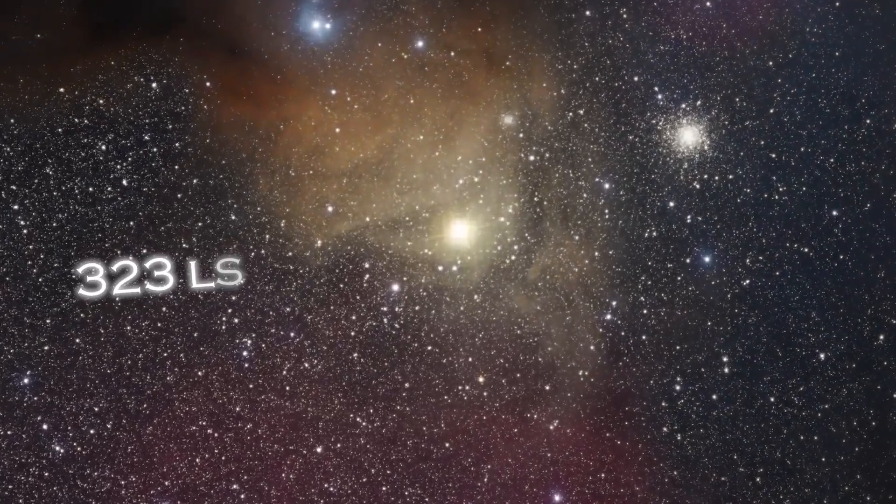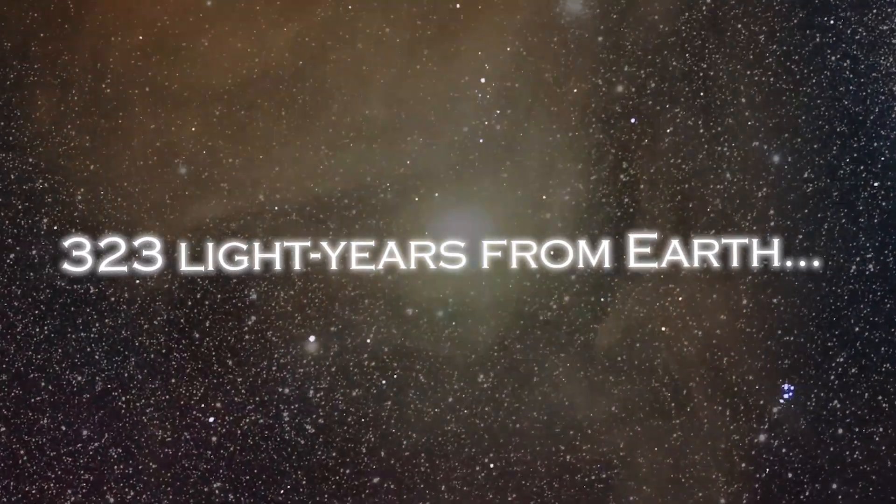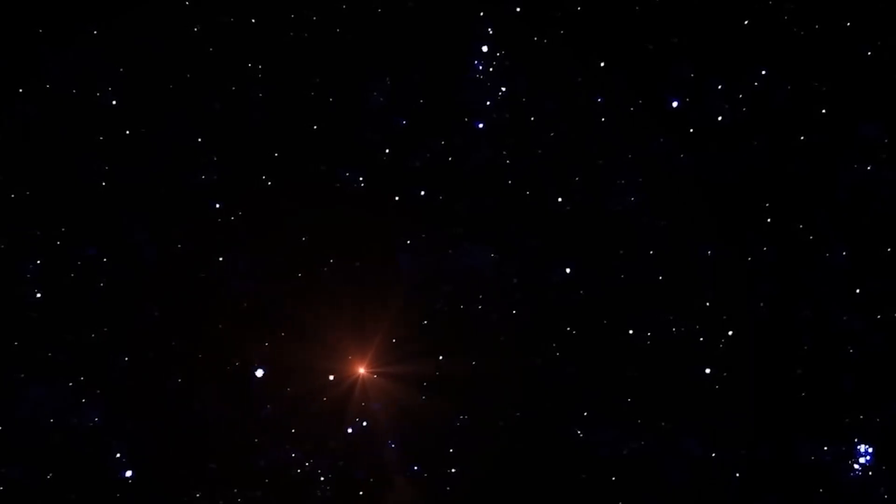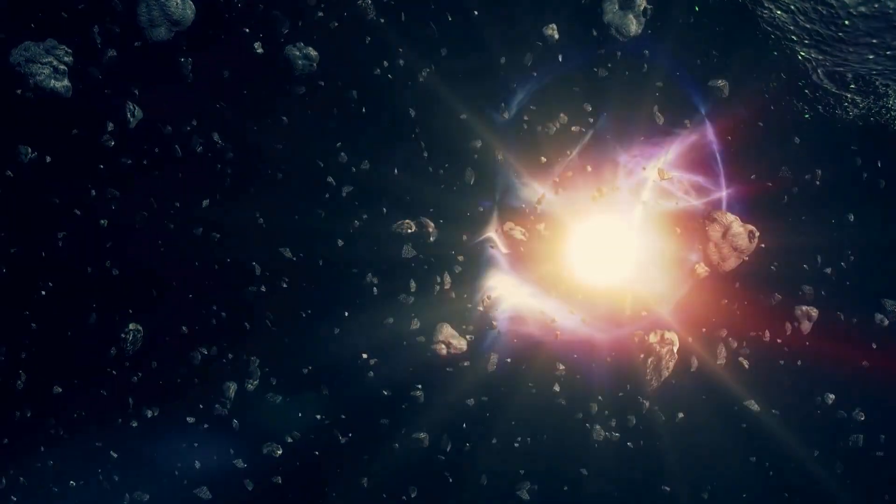Polaris is approximately 323 light-years from Earth, which means that the light we receive from this star today was actually emitted 323 years ago. This great distance means that if Polaris were to explode today, we would not be aware of it until 320 years later.